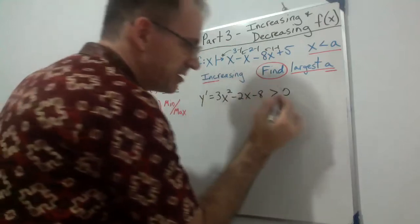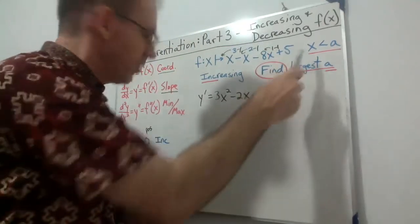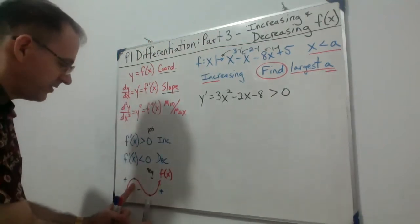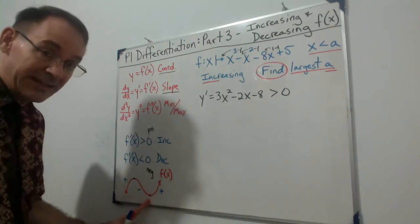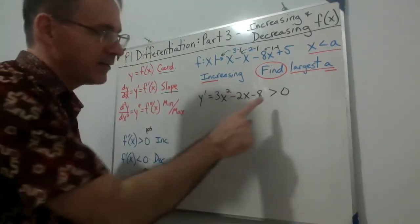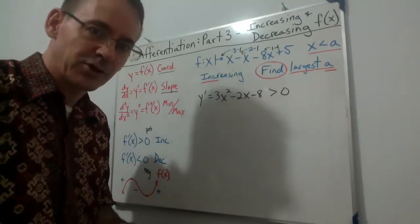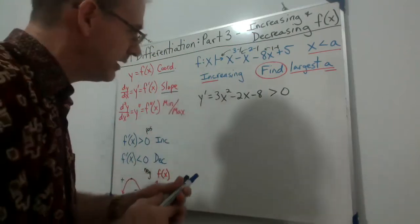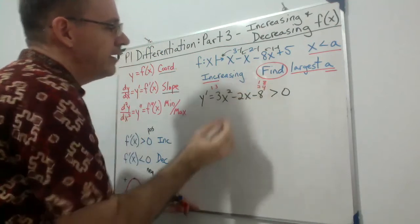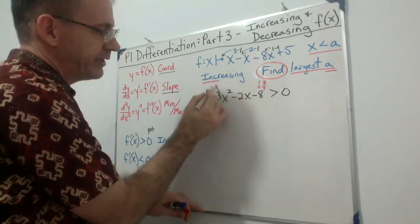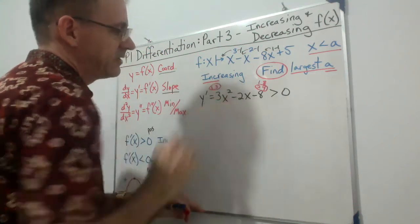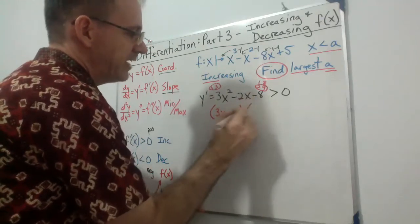Since it says increasing, we set the first derivative greater than zero: 3x² − 2x − 8 > 0. We want to find over what domain. Now we have a quadratic inequality — this takes you back to the quadratics unit. We factor it: factors of 3 are 1 and 3; factors of 8 include 2 and 4. We want −6 + 4 to give us −2, so we get (3x + 4)(x − 2) > 0.